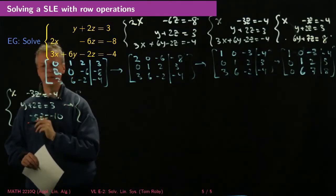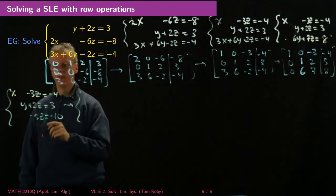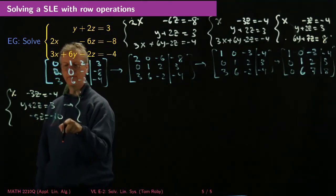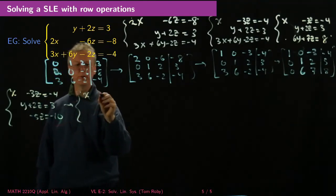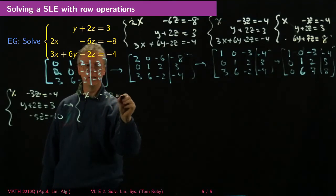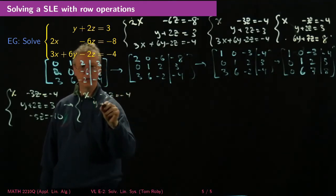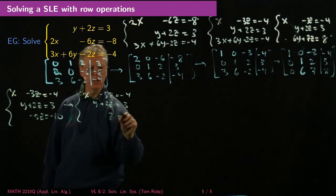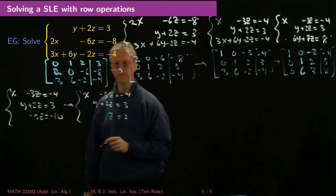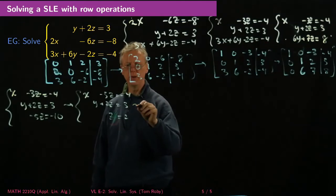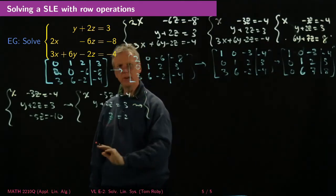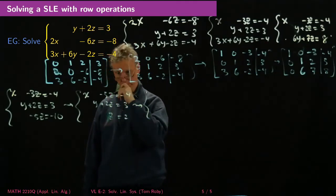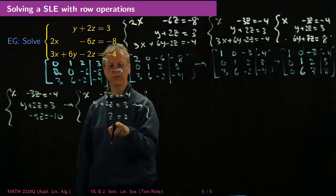So I'm getting closer. This might seem kind of tedious but remember that this is actually very fast for a computer to do. So then the next system of equations is what? Well, I can divide through by negative 5 to make this one easier to understand so it's x minus 3z equals negative 4, y plus 2z equals 3 and now this just becomes z equals 2 and we've already found one of the variables.